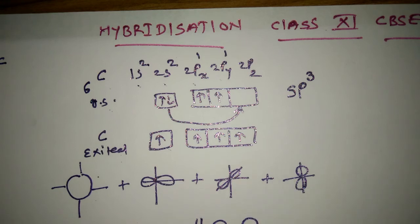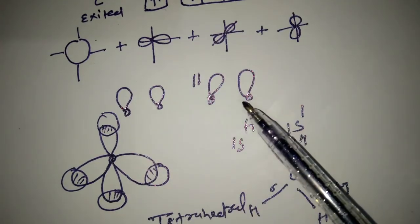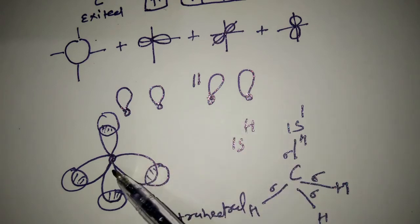After hybridization, we get identical orbitals having the same energy level and identical shape. Four orbitals. These four hybrid orbitals arrange in tetrahedral manner.